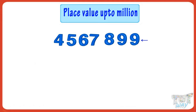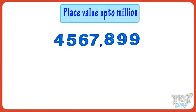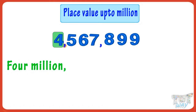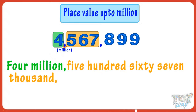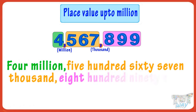Let's take another example. Starting from the left, four digits are left, so put a comma after three digits. Now let's read the number: it will be four million, as the name of the second comma from the left is million; five hundred sixty-seven thousand, as the name of the first comma from the left is thousand; and eight hundred ninety-nine. So our number is four million five hundred and sixty-seven thousand and eight hundred ninety-nine.